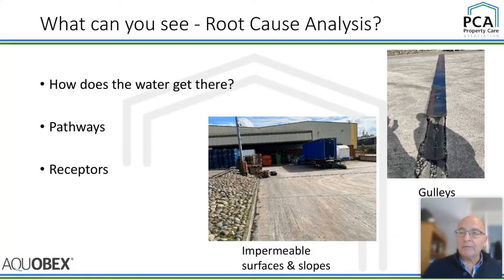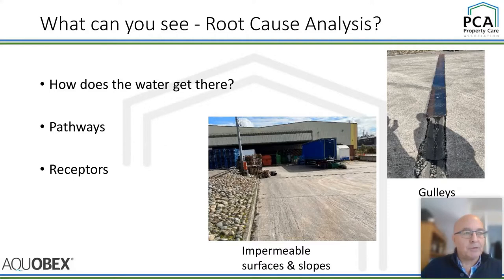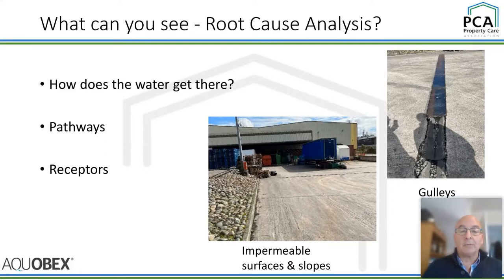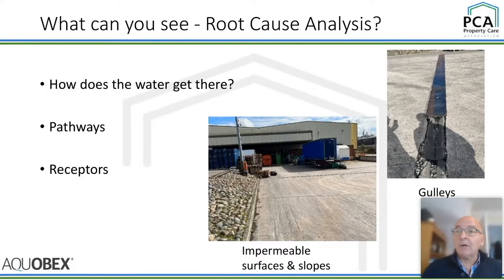Before you've even started looking at the property, consider the root cause — how does water get to the property? These photographs are from a recent survey at a factory up north. Architects: please stop putting doorways and entrances at the bottom of slopes, particularly where that slope has an impermeable surface. In this instance, lorries were going over a gully running left to right across the picture. They found it uncomfortable and plated over the gully — so now the water has no chance of getting into the gully and is heading straight for the factory entrance.